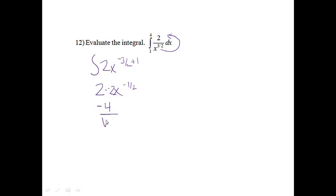So this becomes negative 4 over the square root of x. I now do need to evaluate it at 4 and 1, so I will plug 4 in first, and then minus plug in 1. So I end up getting negative 4 over 2, which is negative 2, and then this will be plus 4. Negative 2 plus 4 is 2.